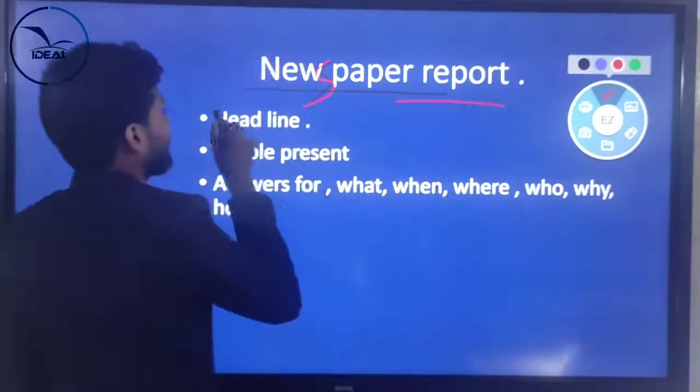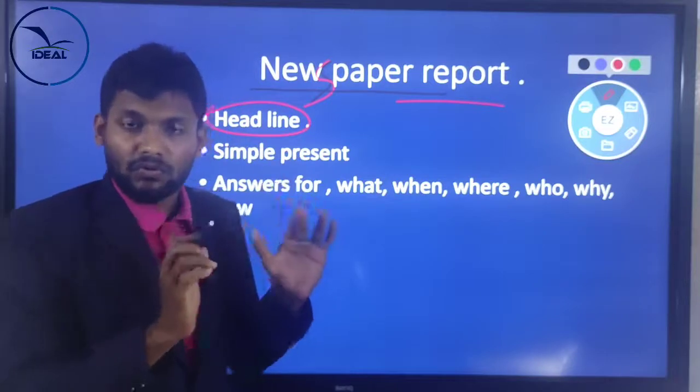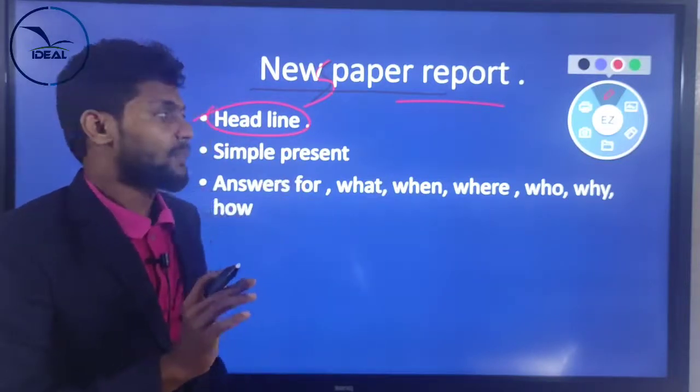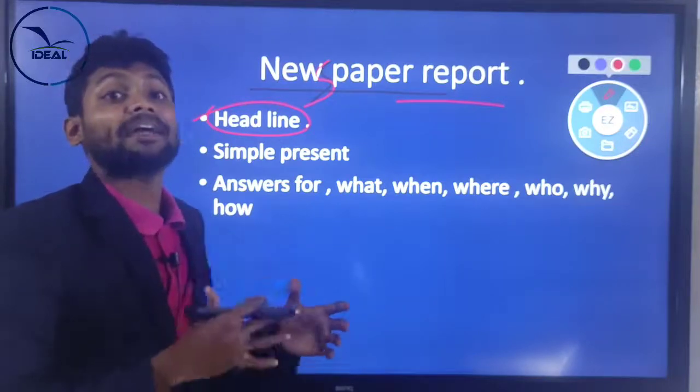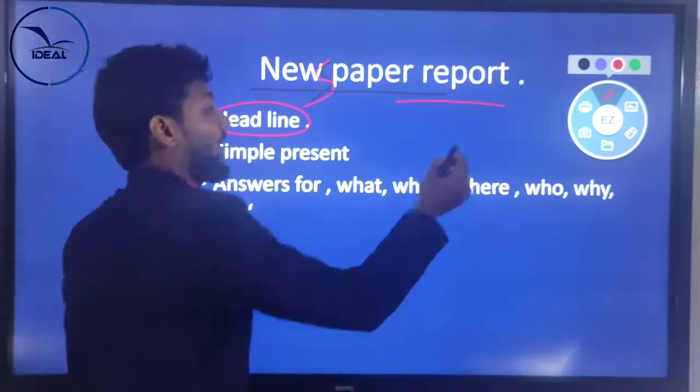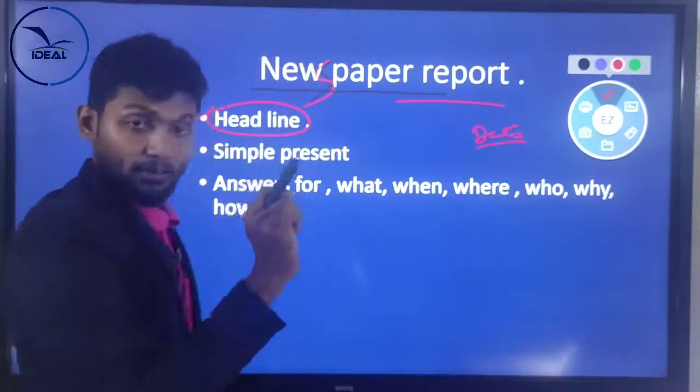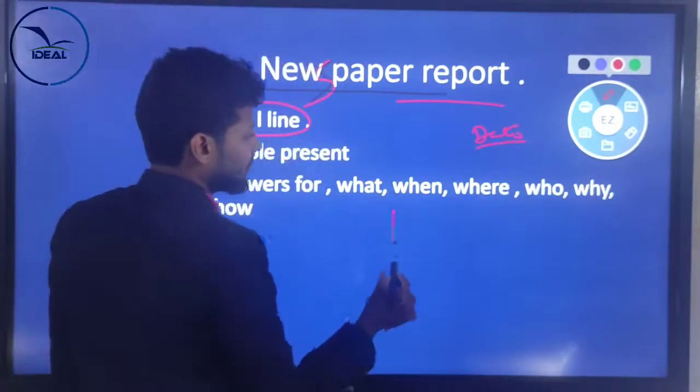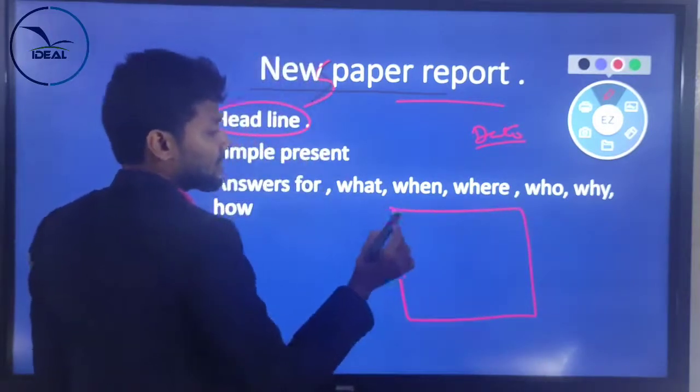When you write a newspaper report, first of all you should give a heading. We need a headline for everything. When you prepare a newspaper report, you may have to write date and time or you don't need that here. Just look at this - give a column like this, and first of all, the heading.